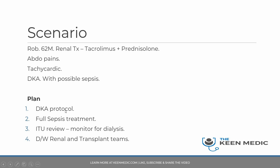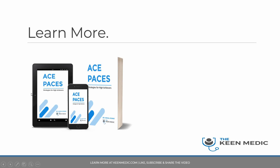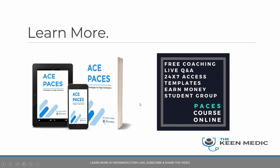Get the ITU team involved as they may need to monitor this patient for dialysis, especially if he is not passing urine. If his renal function is particularly poor, they need to monitor him for acute dialysis. Similarly, talk to the renal and transplant teams about transplant function, need for dialysis, immunosuppression advice, and sepsis treatment. It is always better to over-treat these patients than under-treat. I hope you learned a lot — check out my book on strategies for high achievers for PACES, available in paperback and Kindle.